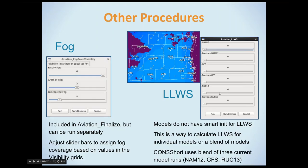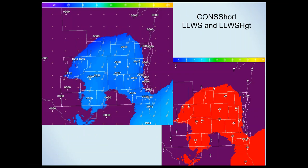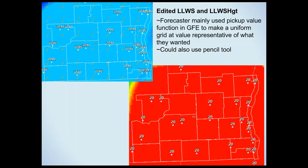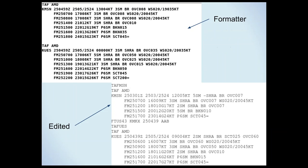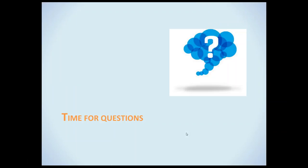There's a tool outside of aviation populate called low-level wind shear where you can pick your model to generate low-level wind shear. An example shows spotty coverage over the area. You might look at Bufkit and the forecast models and decide to use the pick-up value tool to make the value more representative across the whole area, then do the same for low-level wind shear height. That gets picked up into your TAF formatter. In the TAF formatter, low-level wind shear will look a bit wordy; a forecaster might choose to pare it down before sending.